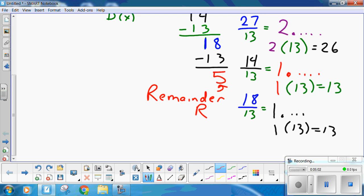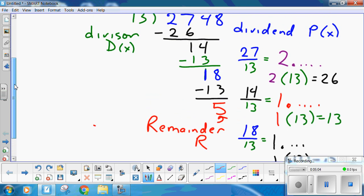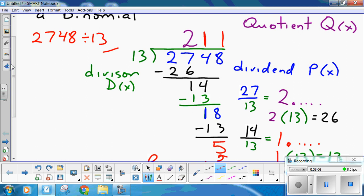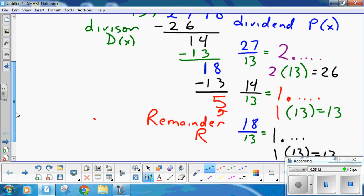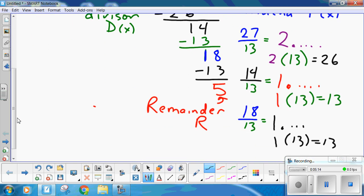So then I go 18 divided by 13 is 1. 1 times 13 is 13. So I subtract 13 from this, and I'm down to 5. This is my remainder. I forgot to put my extra 1 up here. So the answer is 211, with a remainder of 5. So take a look at that.